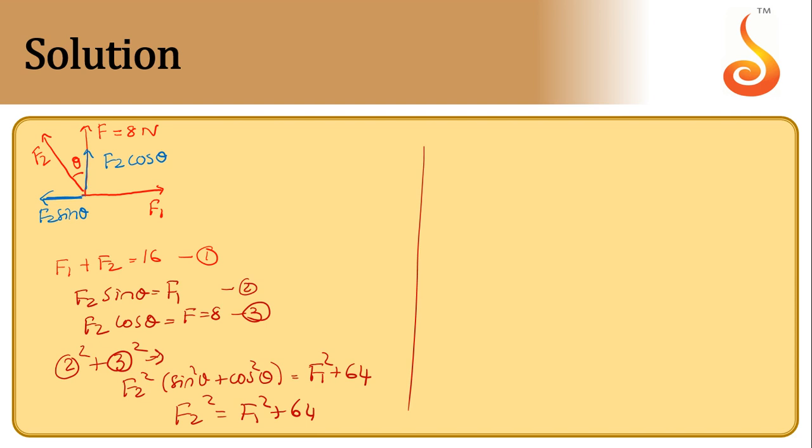So I will rewrite it like this: F2 square minus F1 square is equal to 64, or F2 minus F1 times F2 plus F1 is equal to 64. But we know F2 plus F1 is 16 from equation number 1.